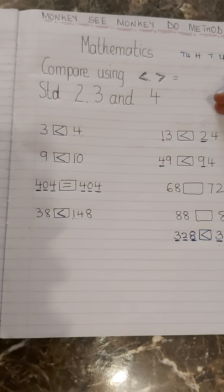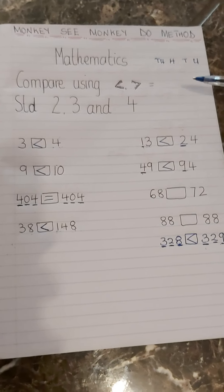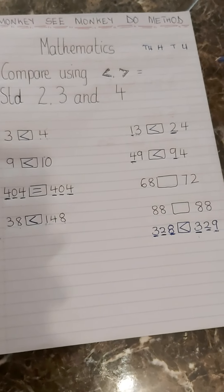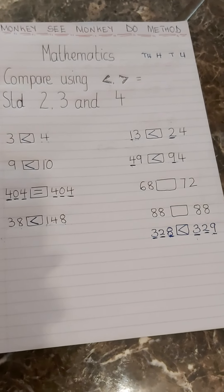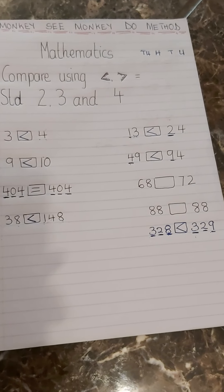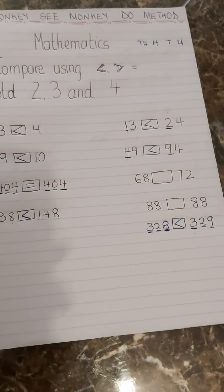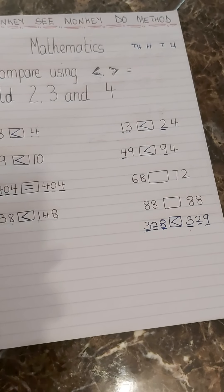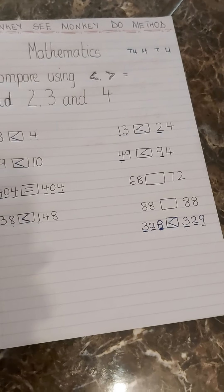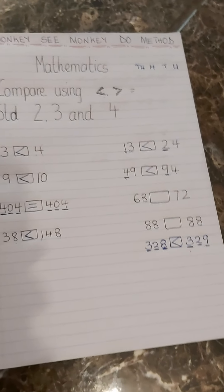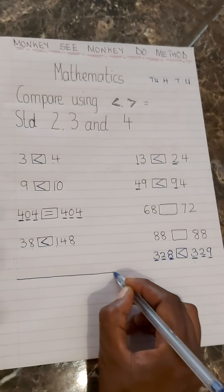Please, when you introduce comparing using greater than, smaller than, and equal, use the Monkey See Monkey Do method, because our children are not the same — their thinking capabilities are different. Some kids are fast, some are slow, so let's cater for all of them. Even at home, don't compare your kids. Try to find a simpler method of teaching to cater for each child. Thank you very much and God bless you. Now I am going to give you an exercise.